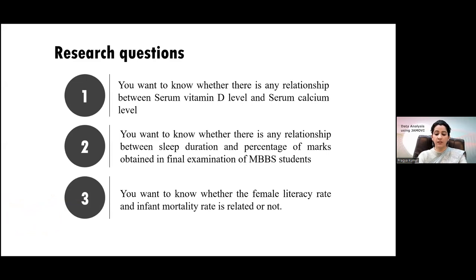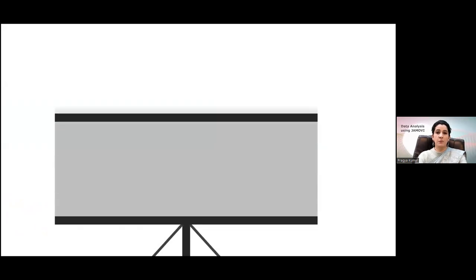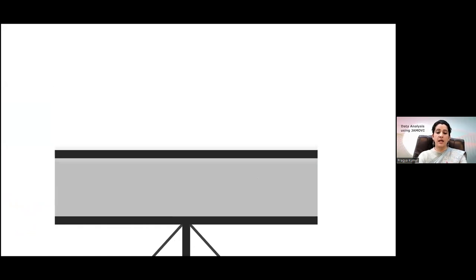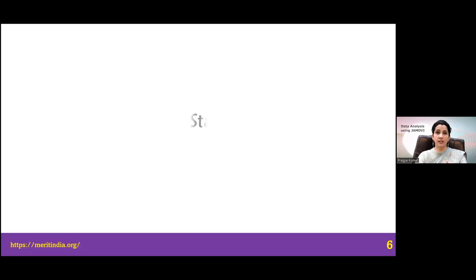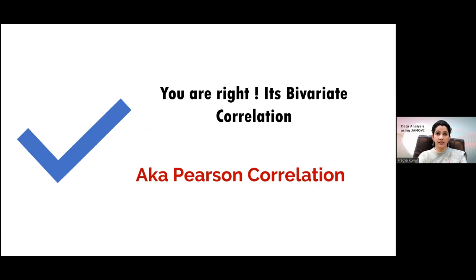To answer all these research questions, there is one continuous variable and we want to know the relationship of this continuous variable with another continuous variable. The appropriate statistical test for such type of research question is the bivariate correlation, also known as Pearson's correlation.